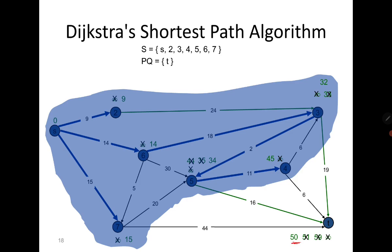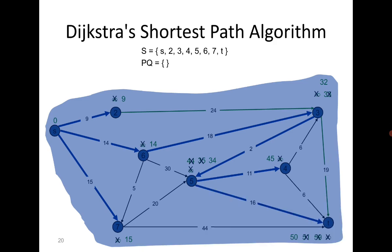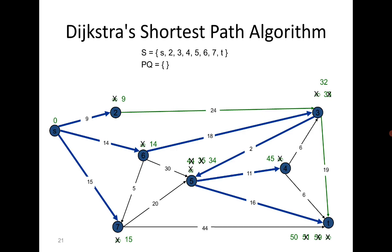From vertex 4, 45 plus 6 is 51, so we do not update t — we already have the smaller value of 50. Finally we move to t with distance 50. The algorithm gives us the minimum or shortest path from s to all other vertices.